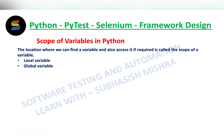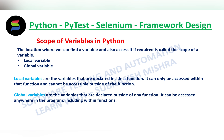Mainly there are two types of scopes. One is local variable and one more is global variable. Local variables are the variables that are declared inside a function. They can only be accessed within that function and cannot be accessible outside of the function.